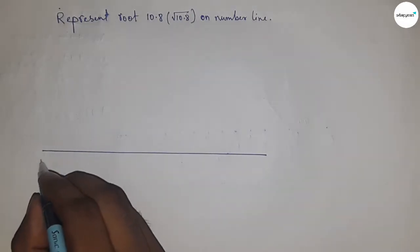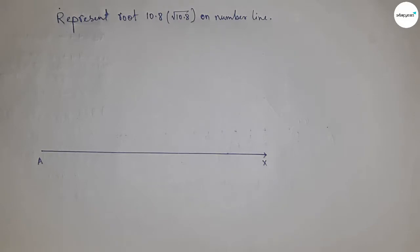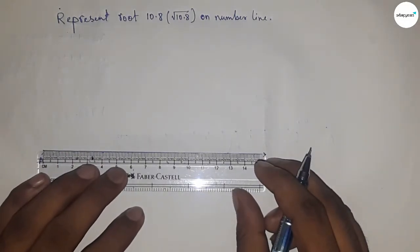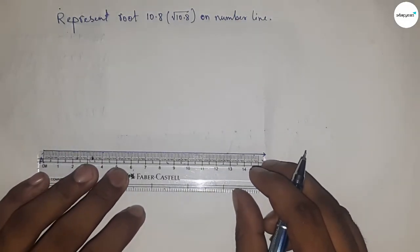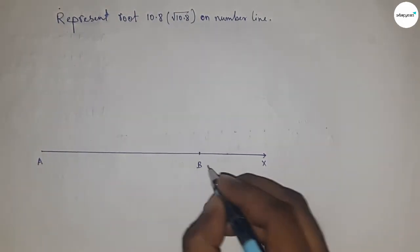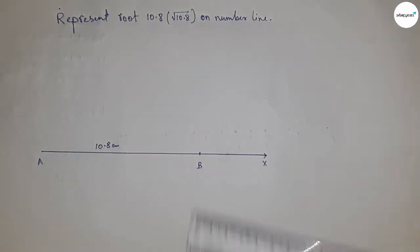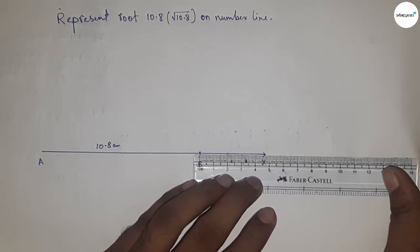First of all, drawing a line of any length and taking this is AX line. Next, taking a length 10.8 centimeter by using scale, so this is 10.8 centimeter and this is taking B point. So AB is 10.8 centimeter.